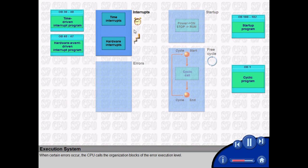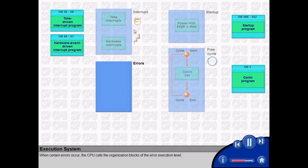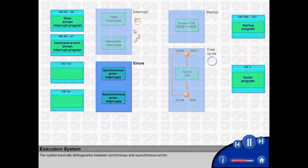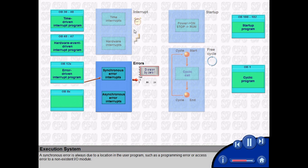When certain errors occur, the CPU calls the organization blocks of the error execution level. The error program you called from the organization block now determines the reaction to this event. The system basically distinguishes between synchronous and asynchronous errors. A synchronous error is always due to a location in the user program, such as a programming error or access error to a non-existent IO module.